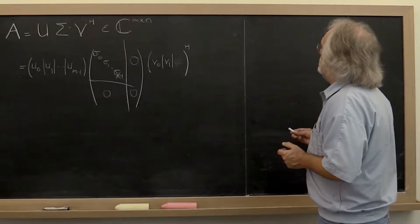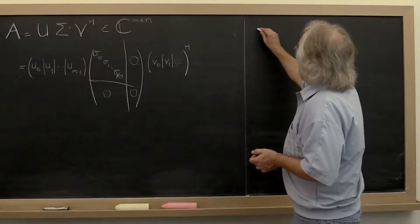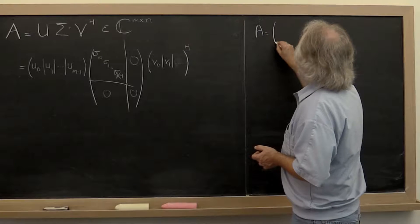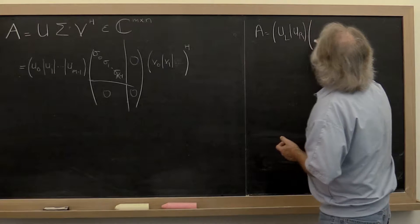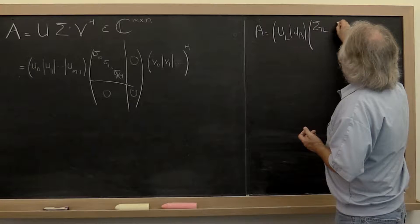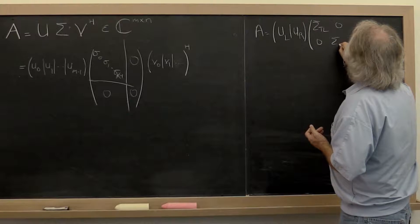How can we sharpen this a little bit? Well, notice that what this really means is that A can be written as U left, U right, times sigma top left, zero, zero, sigma bottom right...